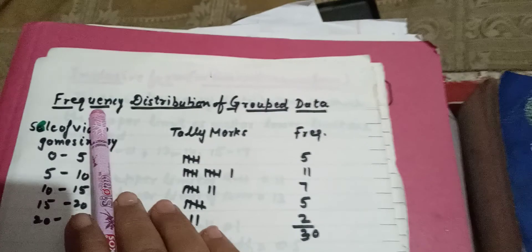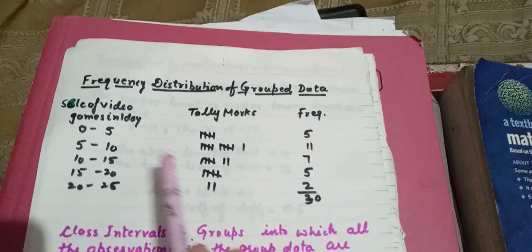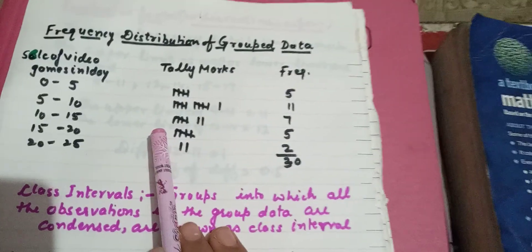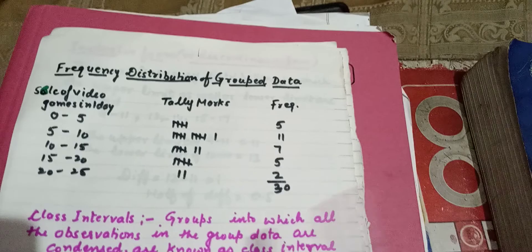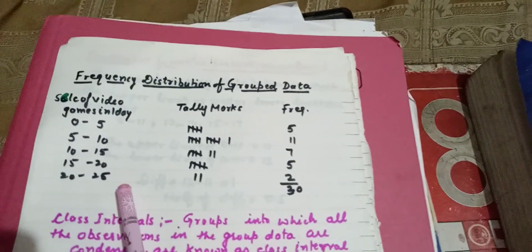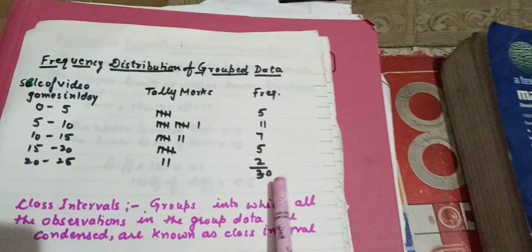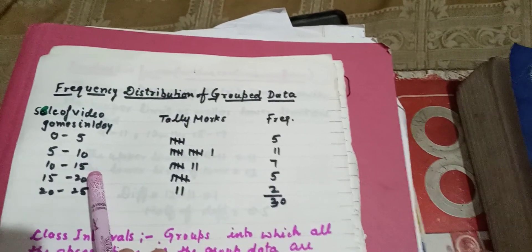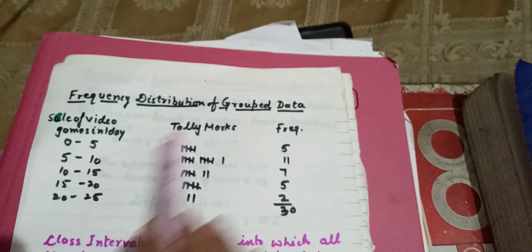Next we have frequency distribution of grouped data. When data is small — like five or ten students' marks — you arrange them in ascending or descending order using an ungrouped frequency distribution. But if the range of our data is large, say 0 to 100, and the number of observations is more, then we use grouped frequency distribution. We arrange them in groups like 0 to 5, 5 to 10, 10 to 15, and then arrange the data accordingly.